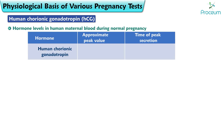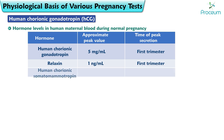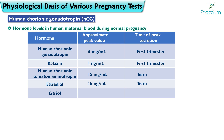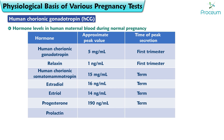Human chorionic gonadotropin: approximate peak value 5 mg/mL, peak secretion in the first trimester. Relaxin: approximate peak value 1 ng/mL, peak secretion in the first trimester. Human chorionic somatomammotropin: approximate peak value 15 mg/mL, peak secretion at term. Estradiol: approximate peak value 16 ng/mL, at term. Estriol: approximate peak value 14 ng/mL, at term. Progesterone: approximate peak value 190 ng/mL, at term. Prolactin: approximate peak value 200 ng/mL, at term.